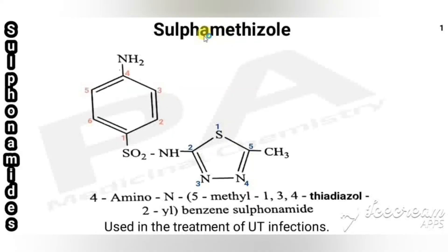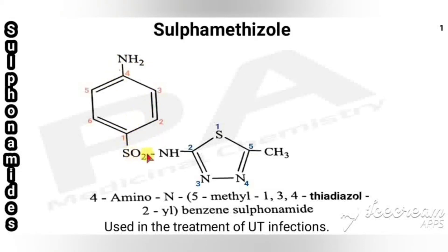In this class we are going to see some important sulfa drugs. The first one is sulfamethizole. All sulfa drugs have the basic sulfanilamide moiety present in all sulfonamides. That consists of aniline with a sulfanamide group at the para position, where one hydrogen is replaced by other groups.